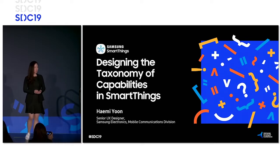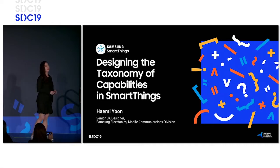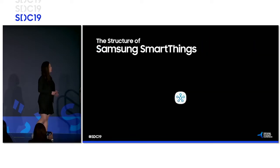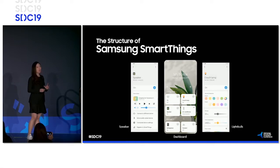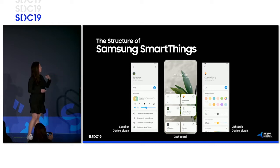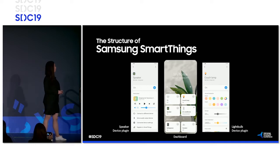The title of this session is Designing the Taxonomy of Capabilities in SmartThings. I do want to introduce the structure and terminologies of Samsung SmartThings before I begin. Upon entering or launching the app, the first screen you see is the dashboard or the main page. On the dashboard you have device cards, and if you select those cards, you'll see the device plugin pages, where you see all the controllers or the information that is collected.